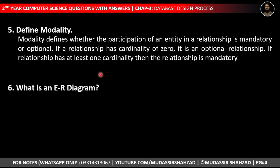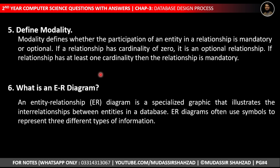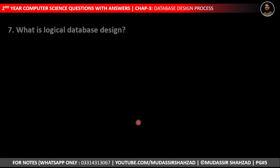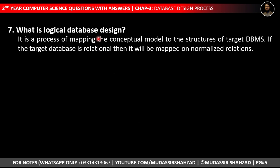What is an ER diagram? An entity relationship diagram is a specialized graphic that illustrates the interrelationships between entities in a database. ER diagrams often use symbols to represent three different types of information. What is logical database design? It is a process of mapping the conceptual model to the structures of a target database management system (DBMS). If the target database is relational, then it will be mapped to normalized relations.